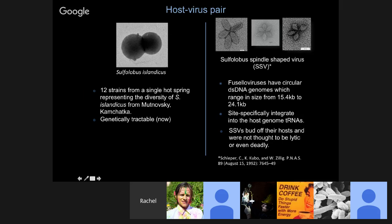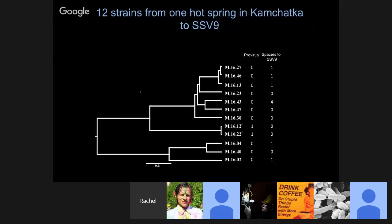We used this set of strains isolated from one hot spring to compare interactions between SSV-9 and these strains. Maria started out with 12 strains. We've looked closely and know there are two different species in this population. We mapped who was infected by a virus onto the diversity of this population — two strains, strain 12 and 22, are infected by an SSV provirus. We also looked at whether they had CRISPR spacers matching SSV-9, and some have spacers while some do not.